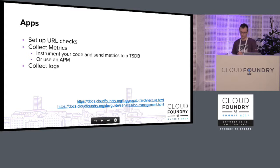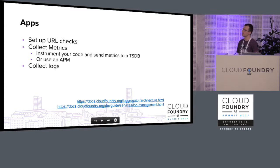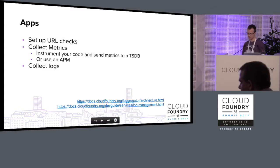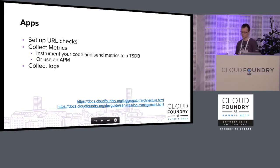A few notes about monitoring your applications. It's simple but really useful to set up URL checks for your applications. You also need to collect metrics — you can use application performance monitoring to get automatically generated metrics out of the box. Personally, I prefer a more old-fashioned approach: instrument your code and send metrics to a time series database. The benefit of this approach is that it's cheap and fully controlled, so you can define metrics with real value.